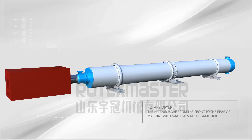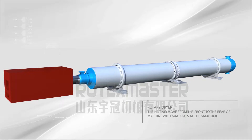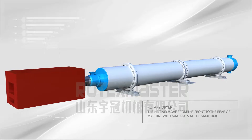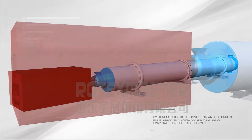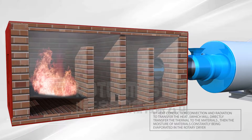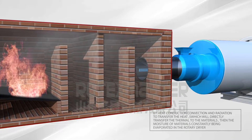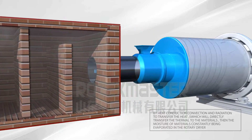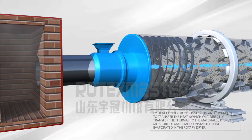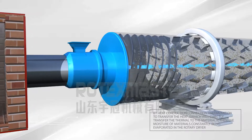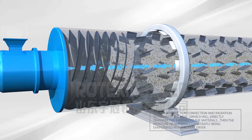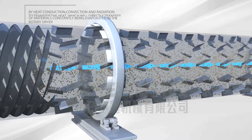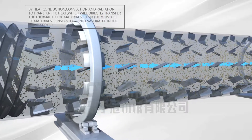In the rotary dryer, hot air moves from the front to the rear of the machine together with the materials. Heat is transferred by conduction, convection, and radiation, which directly transfers thermal energy to the materials. The moisture of the materials is then constantly being evaporated.